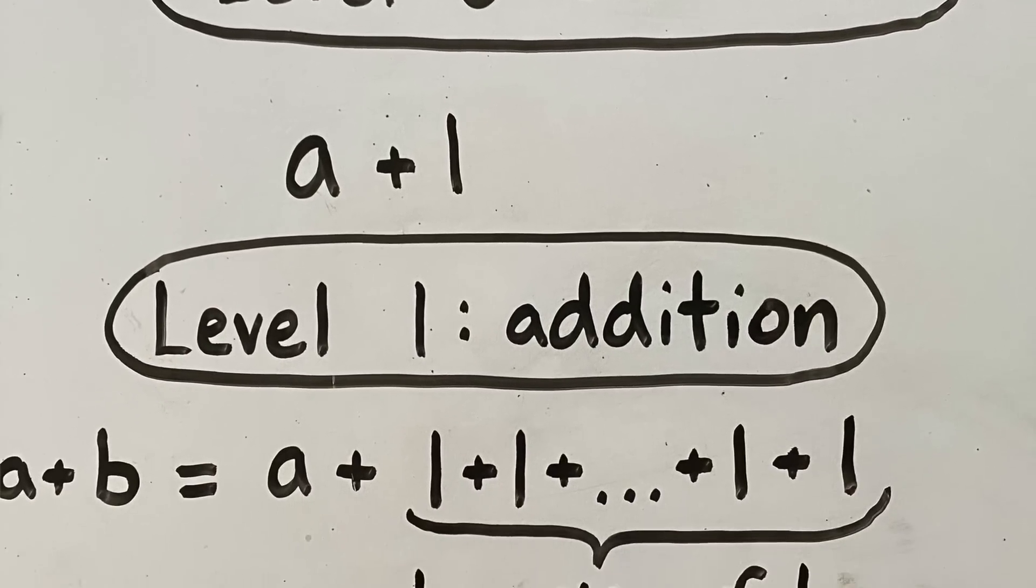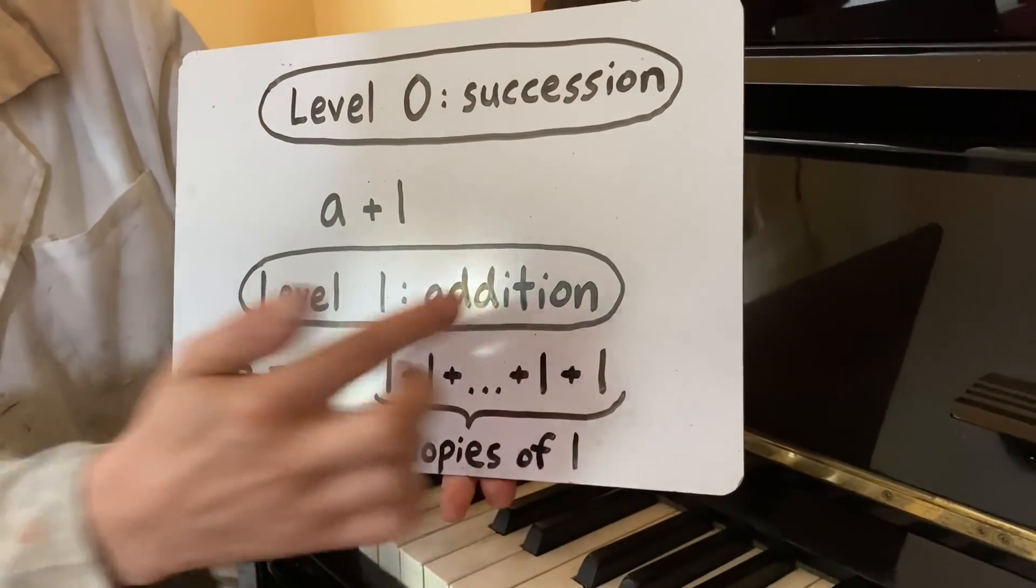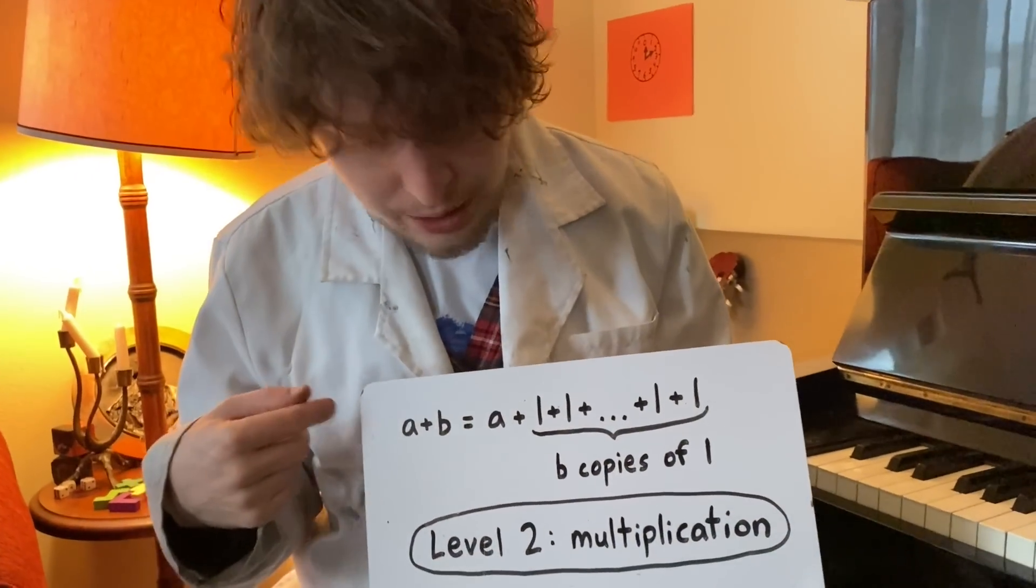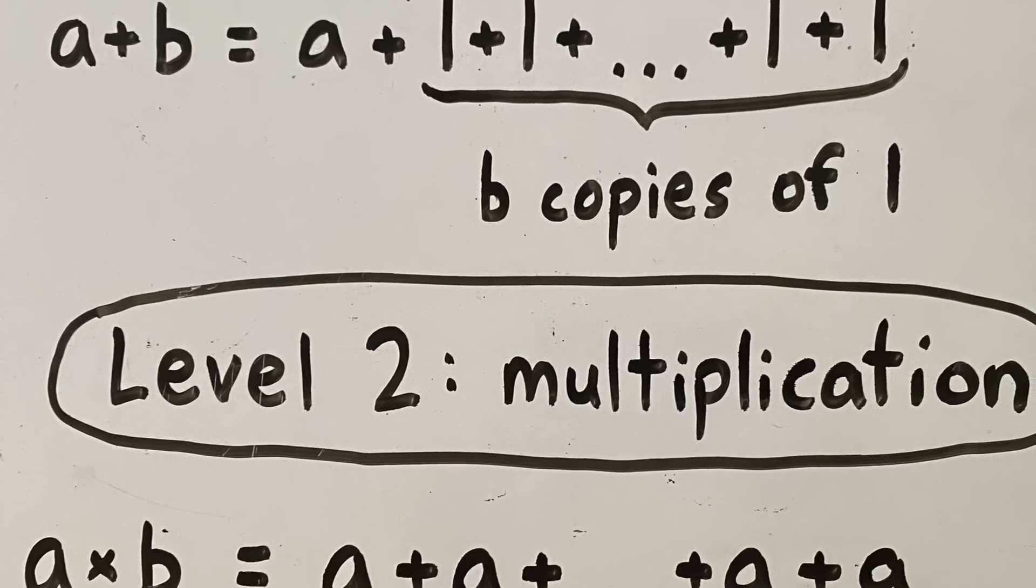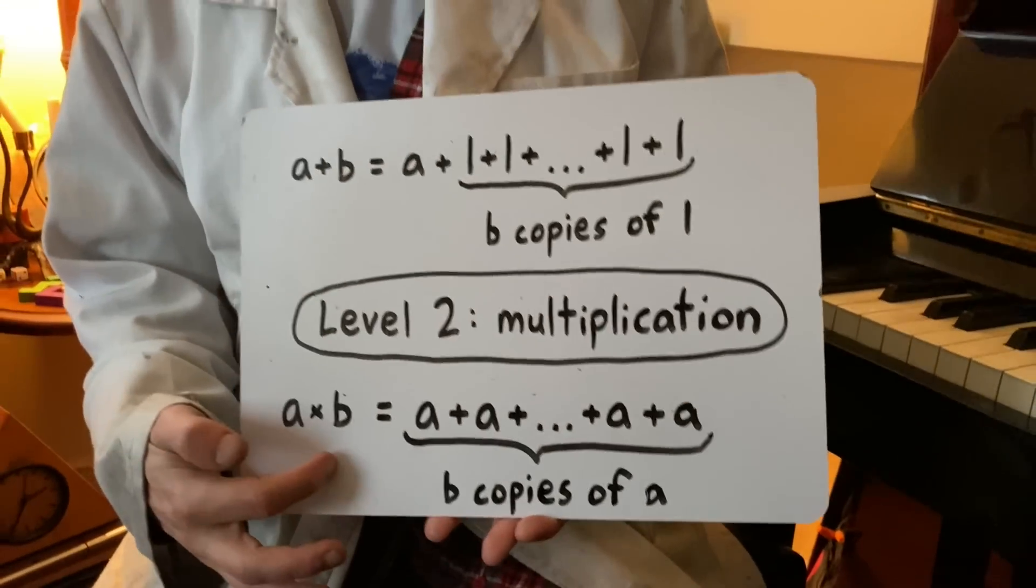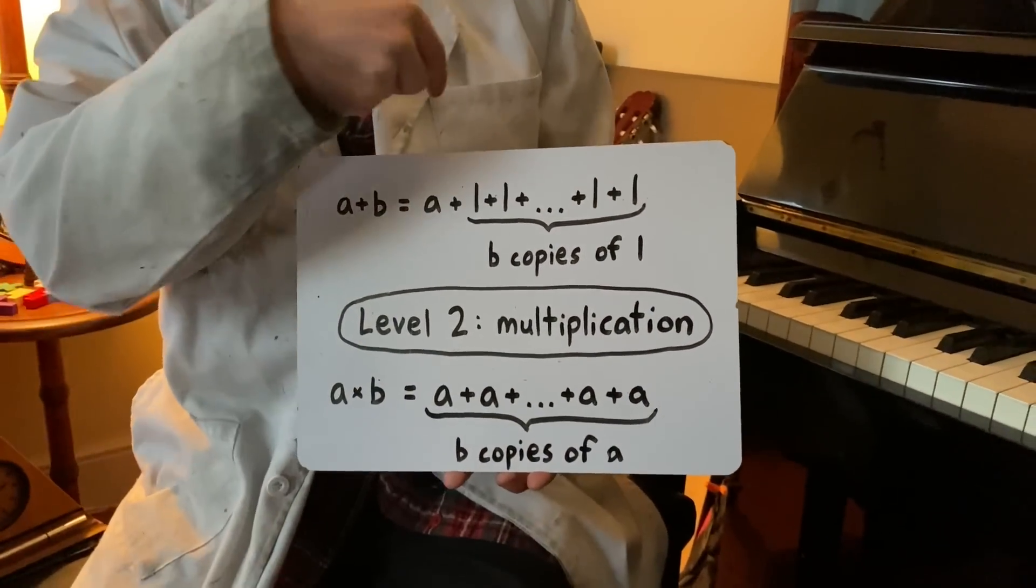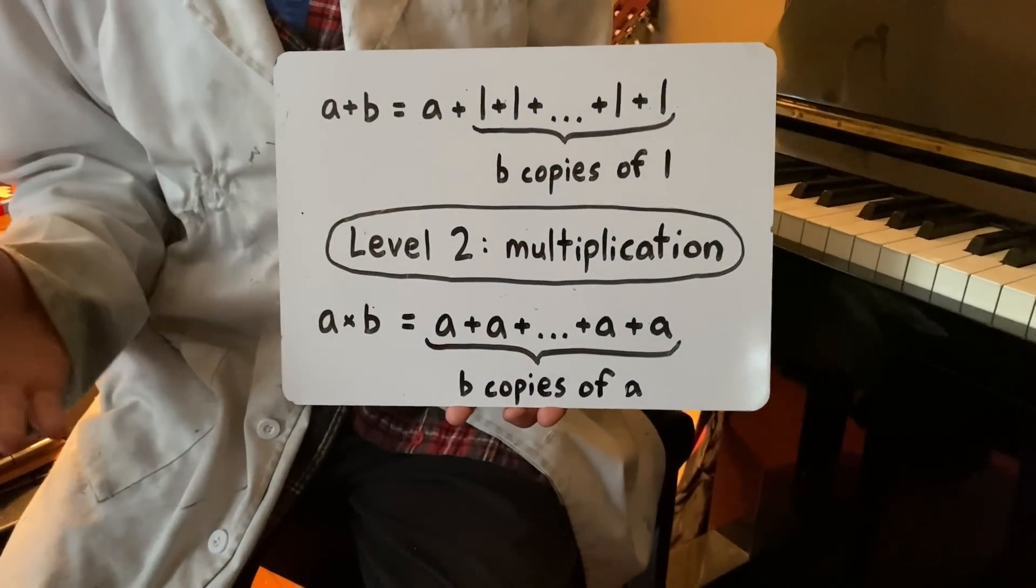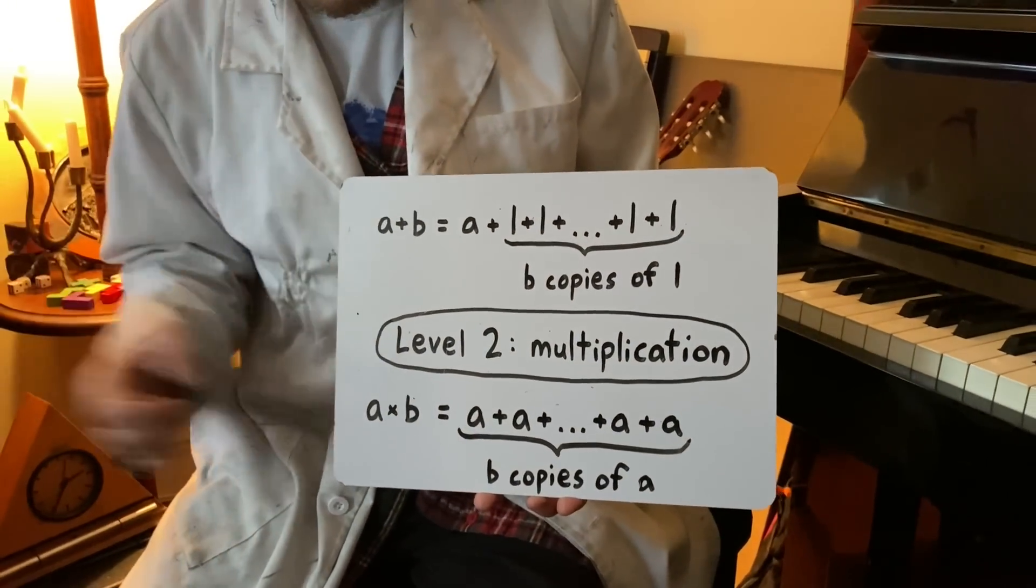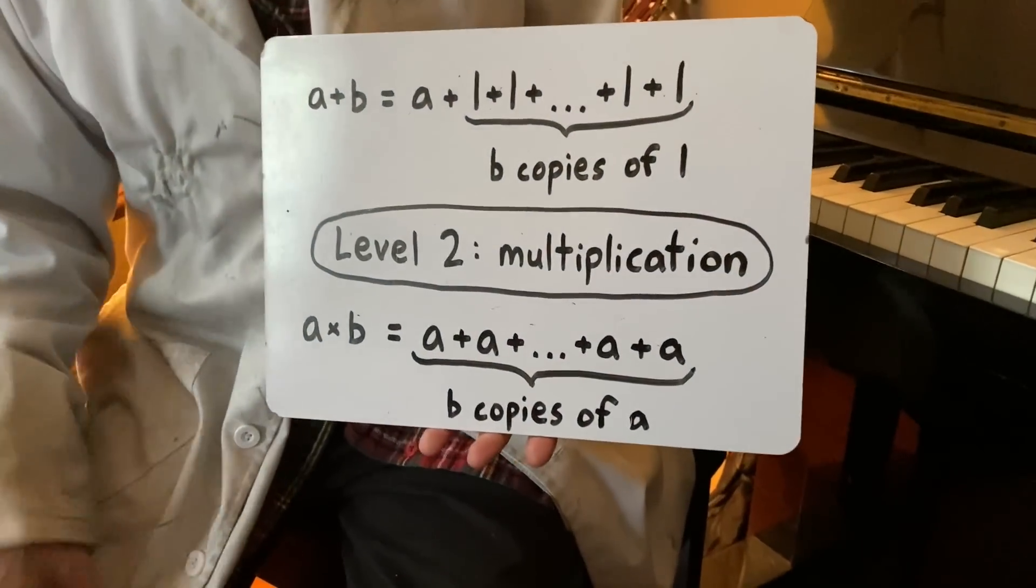Addition is repeating that succession operation a certain amount of times. Like a plus b means we do that succession operation b times. Moving past addition, which we can consider level one of this chain, on to level two multiplication, we essentially need to just repeat the last operation again. A times b means b times we are adding a's. Going from level one to level two does have some changes, like the additive identity element is zero whereas the multiplicative identity element is one, so there are some differences on these levels, but in many ways multiplication is just repeated addition.